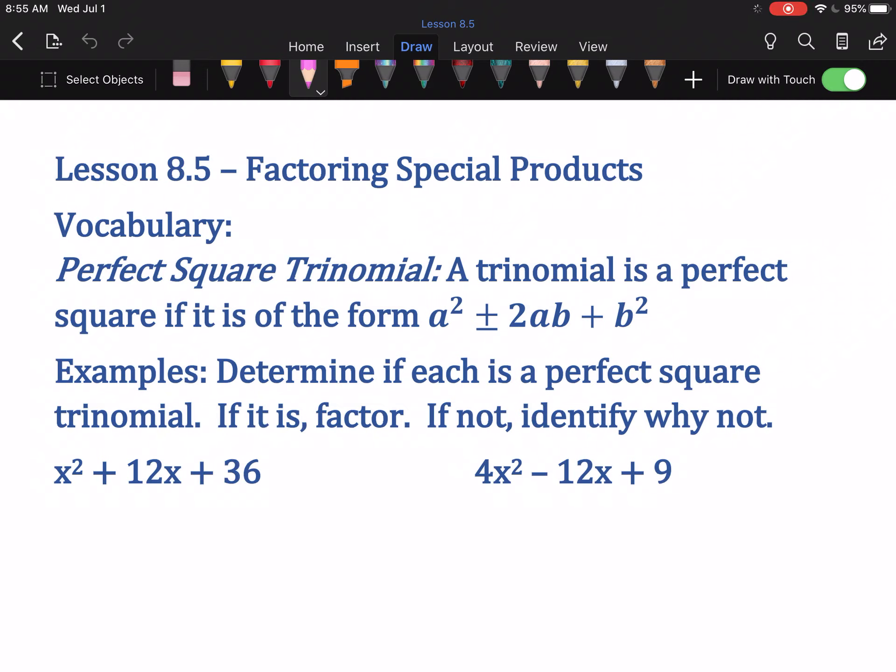8.5 deals with factoring special products, meaning we're going to be looking for a pattern in our trinomials. If we have it, then factoring is going to be a literal piece of cake. There are two different kinds of things: perfect square trinomials and differences of perfect squares, both of which should sound slightly familiar because we discussed them in chapter 7.